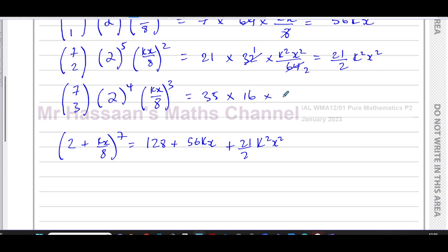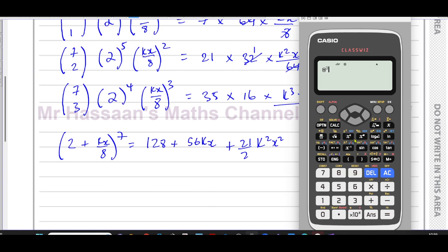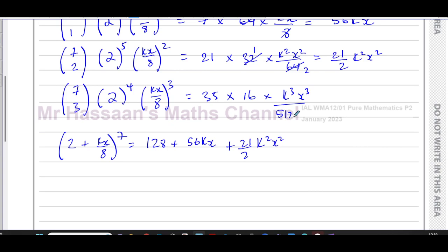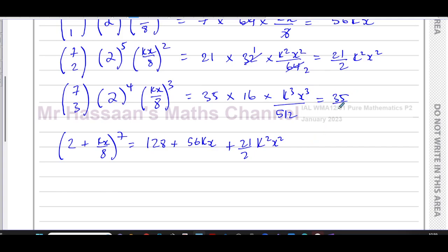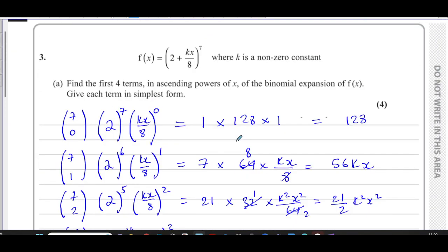Times 2 to the power 4, which is 16, times, now this is going to be all cubed. So we have k cubed x cubed over 8 cubed. Because we have 8 cubed, which gives you 512. So this will give you 35 times 16 over 512. That gives you 35 over 32, 35 over 32 k cubed x cubed. So there is our expansion of this binomial. So that's part A done.